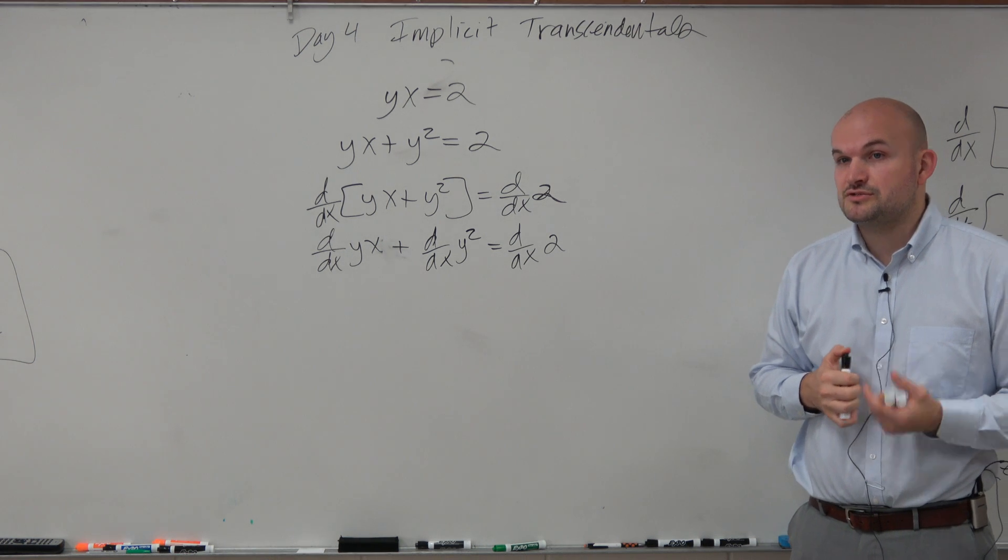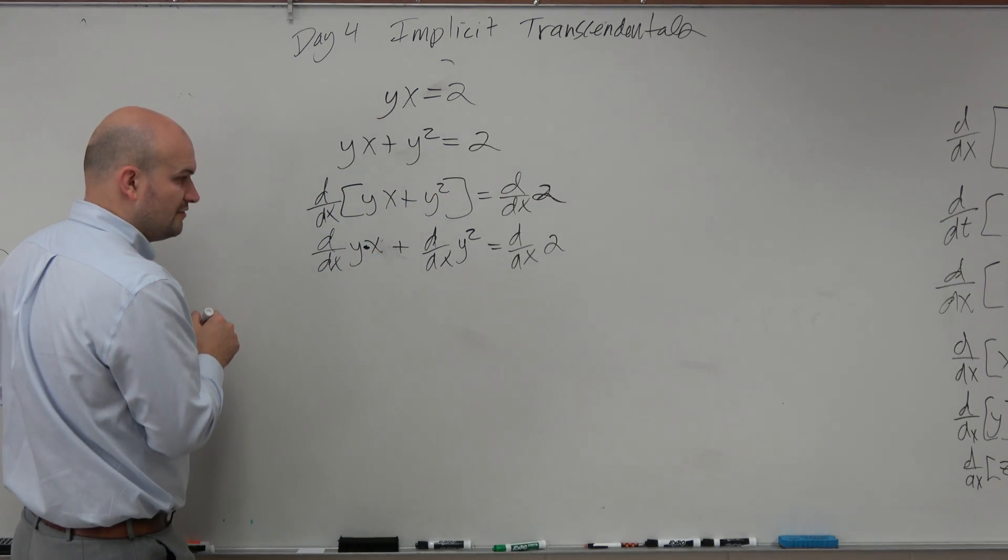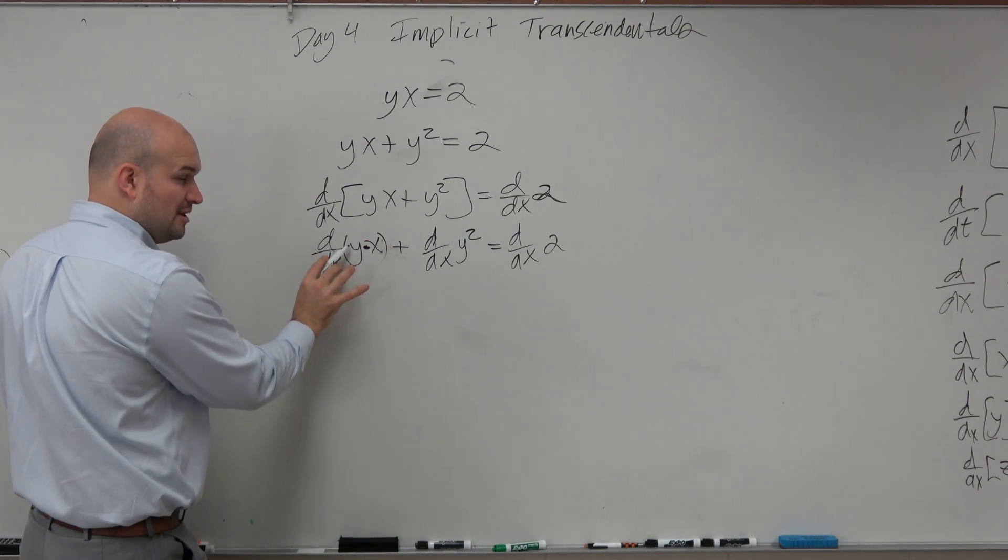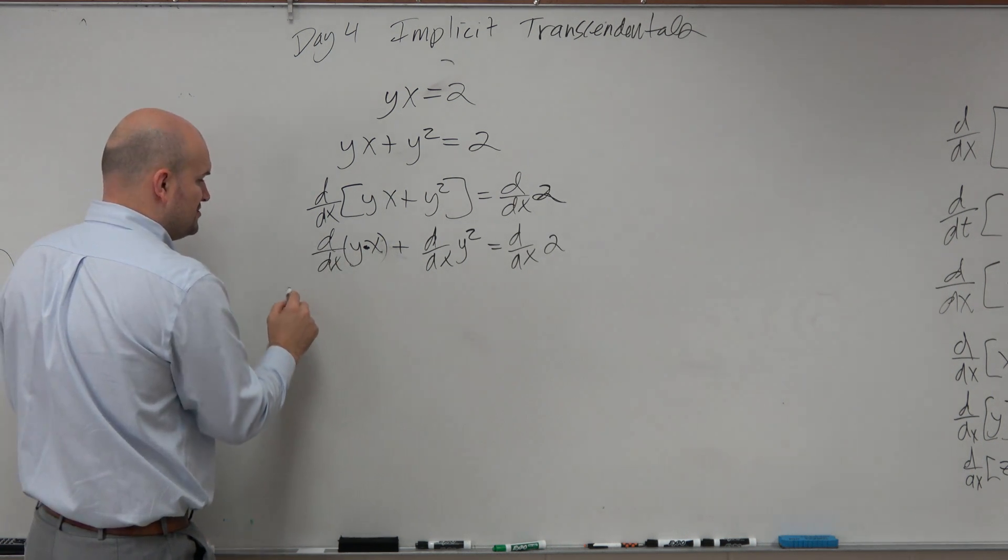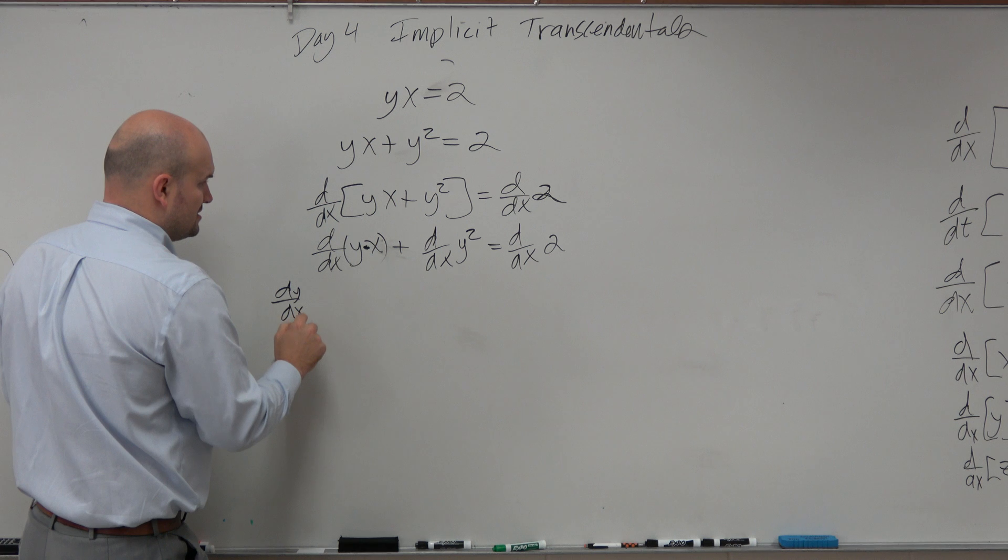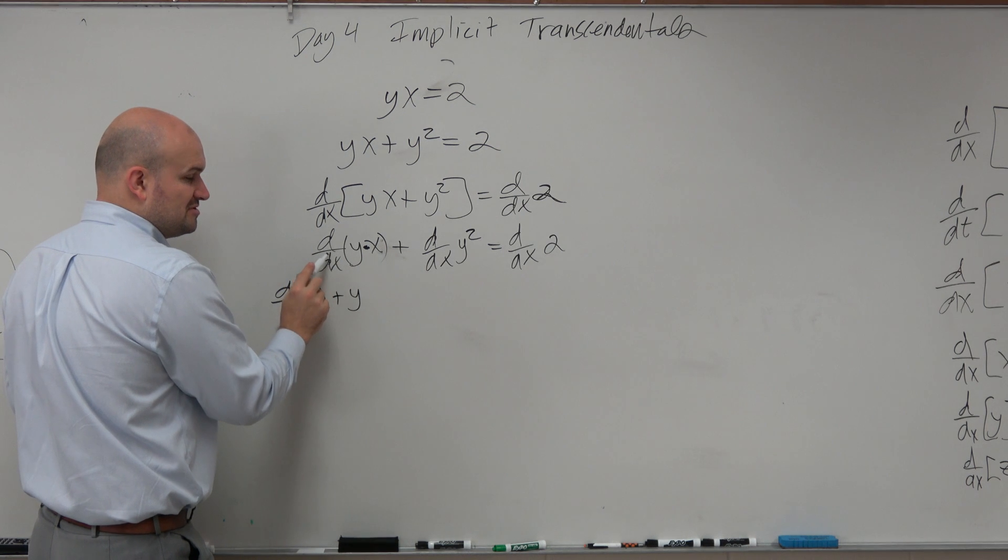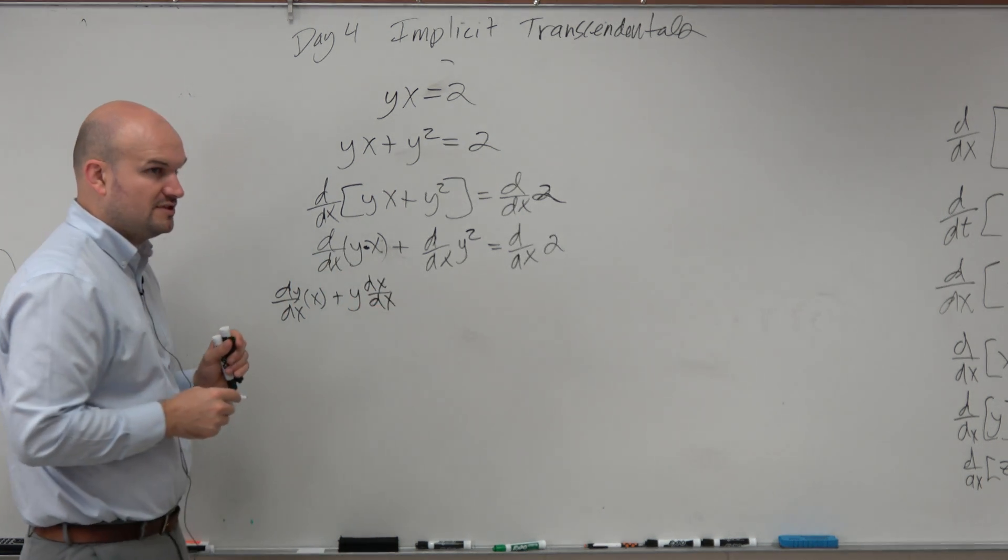So just remember, in this case, we have the product rule. So we already did this, but I'll do this kind of quickly. Doing the product rule, we have to find the derivative of y with respect to x. So that's going to be dy/dx times x plus y. The derivative of x with respect to x, we know that's 1, but let's just use our notation here for a second.